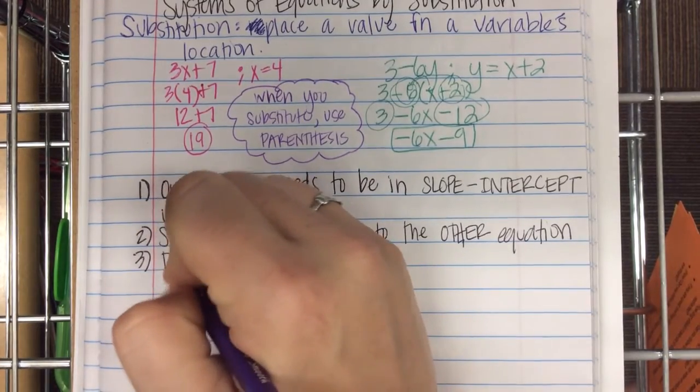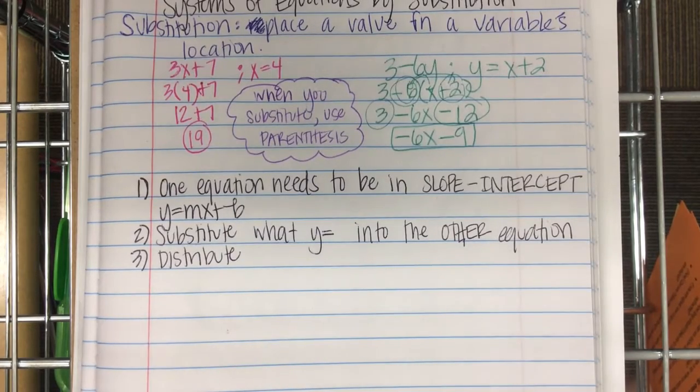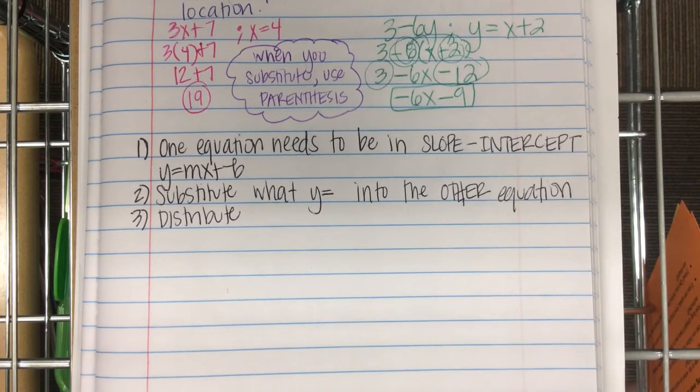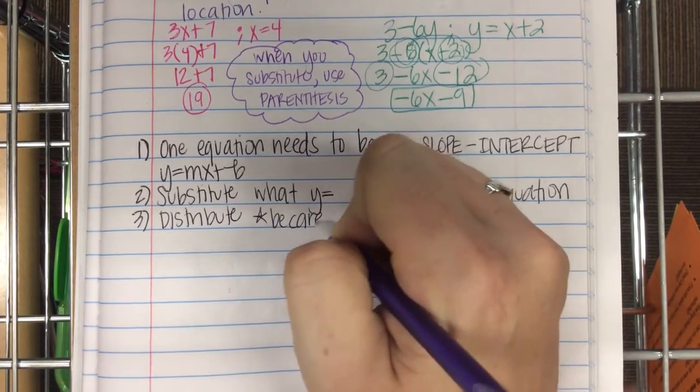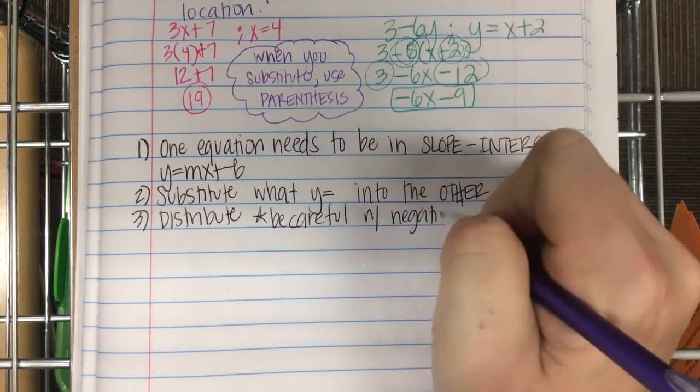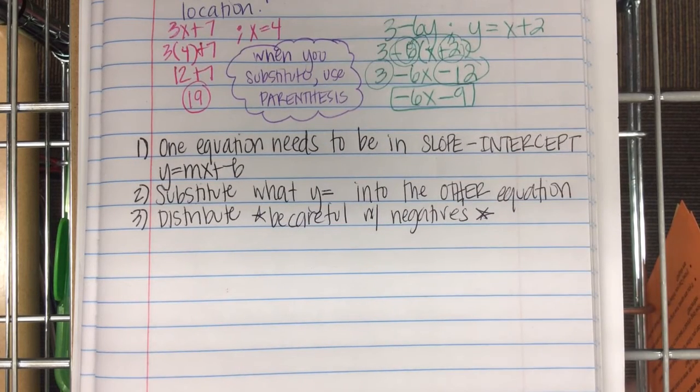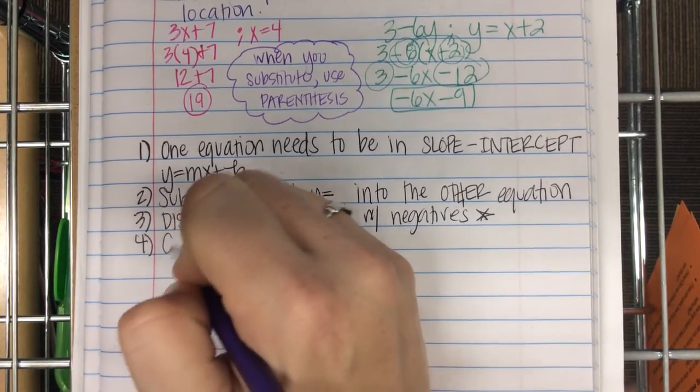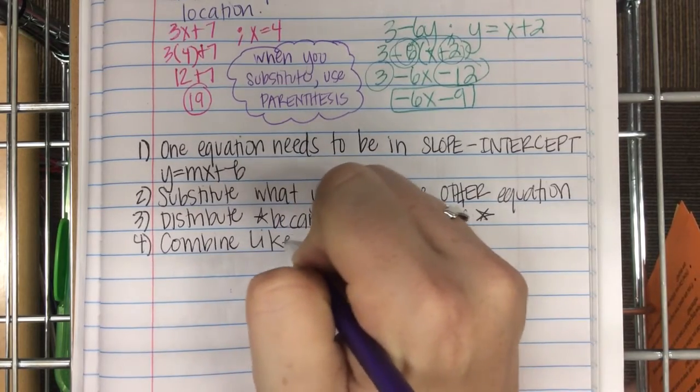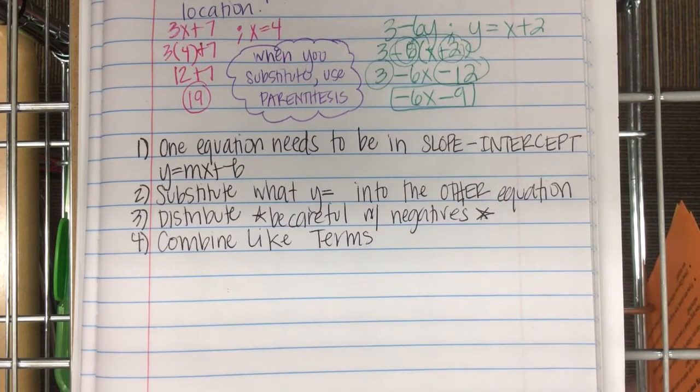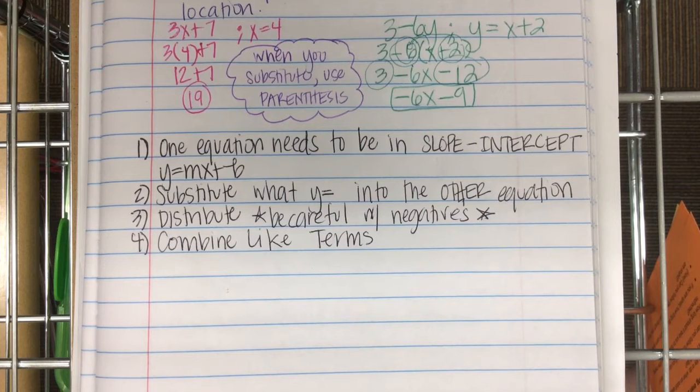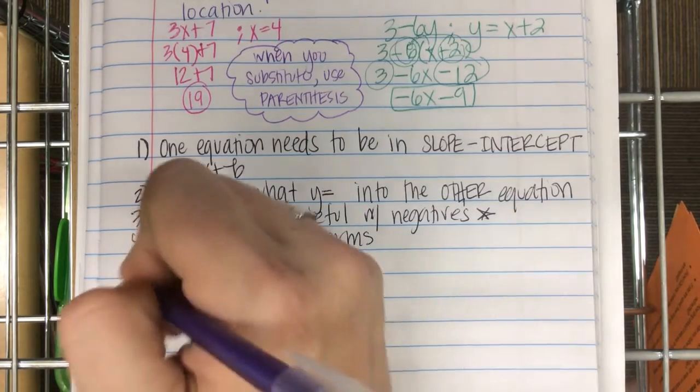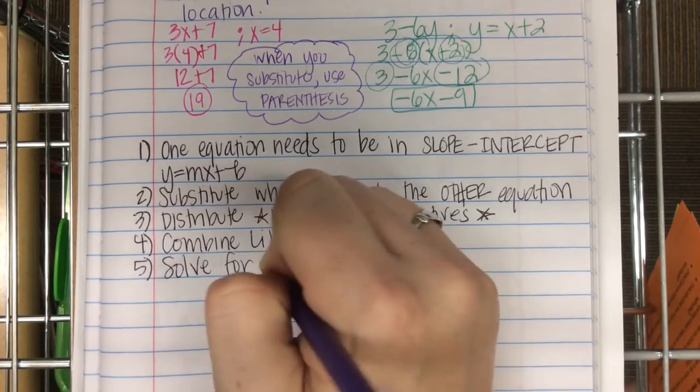Step three, distribute. Be careful with negatives. Combine like terms.